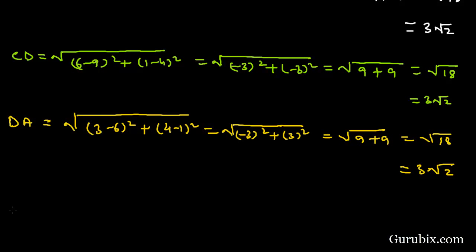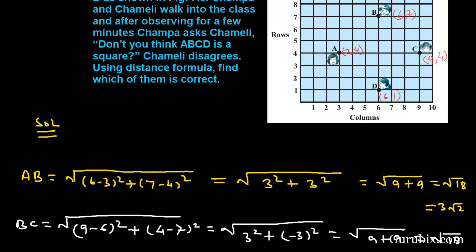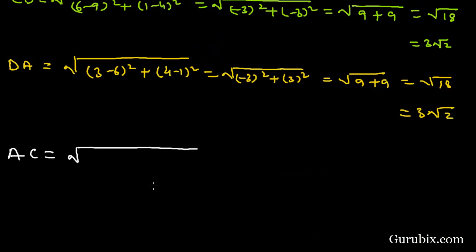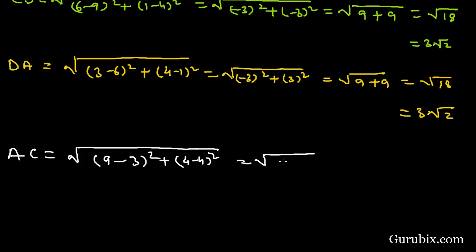Now we find the distances of the two diagonals. First, the distance between A and C: coordinates of A are (3, 4) and C are (9, 4), so AC equals the square root of (9 − 3)² + (4 − 4)² = √(36 + 0) = 6.